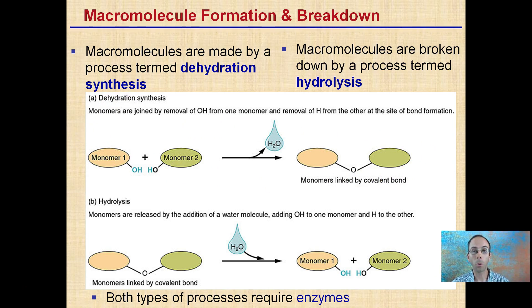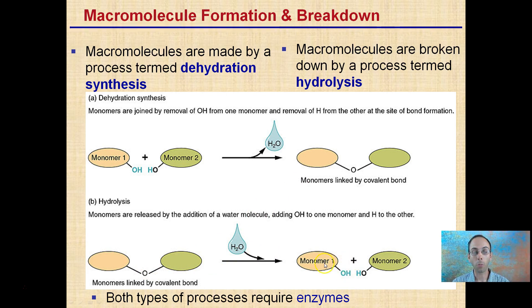The opposite process is breakdown: macromolecules are broken down by a process called hydrolysis. With two monomers linked together, adding water breaks them into two individual monomers. 'Hydro' means taking in water, and 'lysis' means to cut or break. Both dehydration synthesis — removing water to join two monomers — and hydrolysis — adding water to break apart linked monomers — require enzymes. The key distinction: dehydration synthesis removes water to put things together, while hydrolysis takes in water to separate monomers.